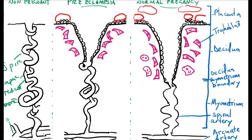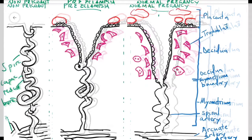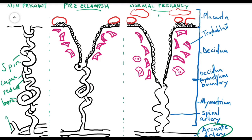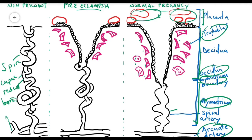Now in the normal pregnancy, this is the arcuate artery — vessels that branch off from the uterine artery. This is the spiral artery, which feeds the placenta. This is the myometrium, and this is the decidium-myometrium junction. The decidium is the mucosal lining of the uterus, also known as the endometrium. These are the trophoblasts, and this is the placental bed.